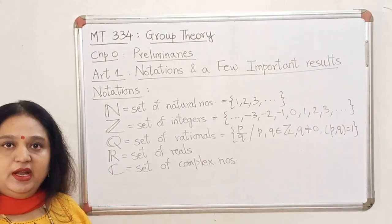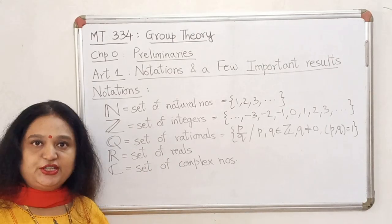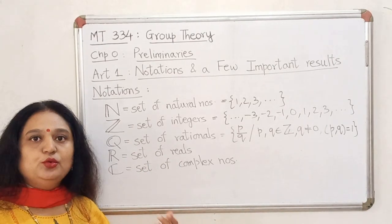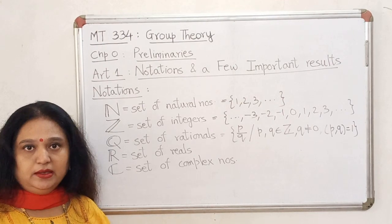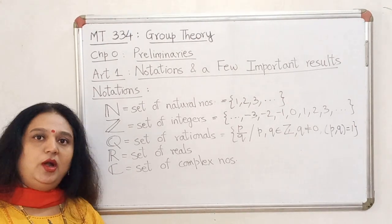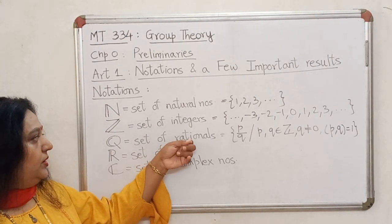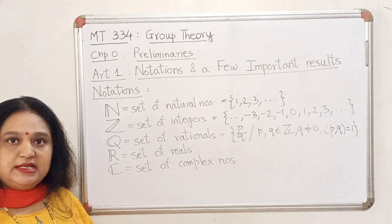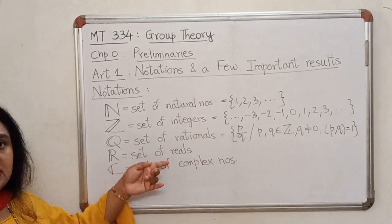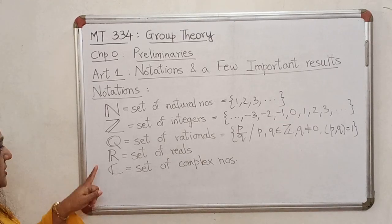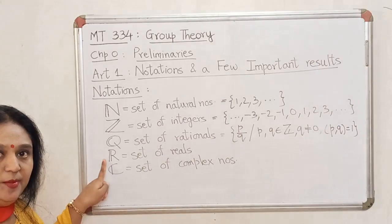Next we come to the set of real numbers. We all know that there are certain numbers which are not rational, like root of 2, root of 3, root of 5, pi, e for that matter. So all these numbers are called irrational numbers. Both rationals as well as the irrationals when we put them together, we get what is called the set of real numbers. And the set of real numbers is denoted by script R.